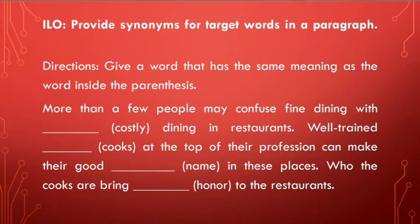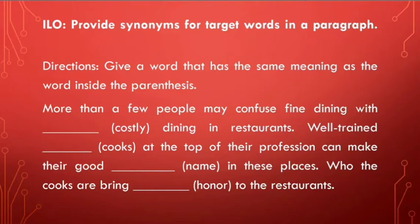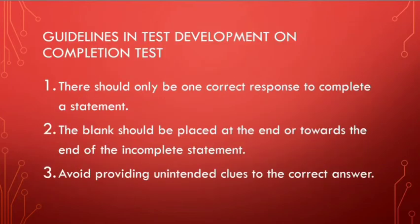'Who the cooks are would bring blank to the restaurant' — the answer could be 'honor,' 'respect,' 'reputation,' or 'awards.' The sentence is correct. This is an example of a gap-filling type of test or completion type of test in a paragraph, and it could also be structured in this way.